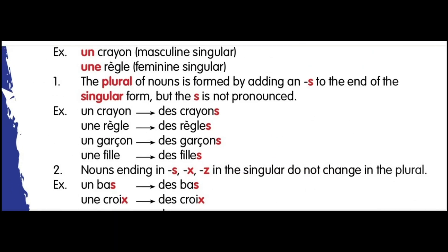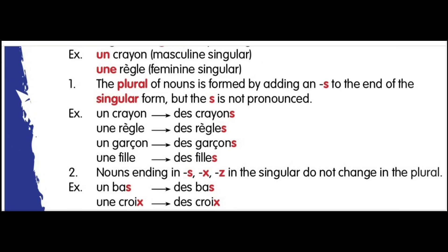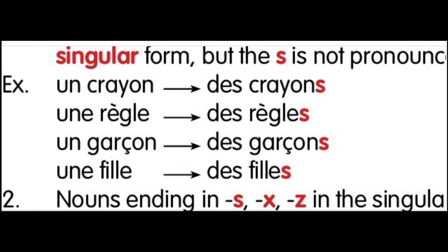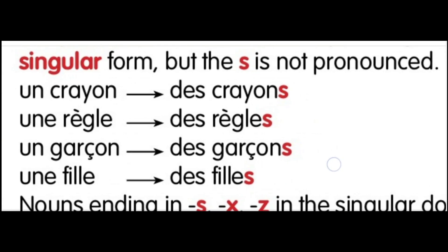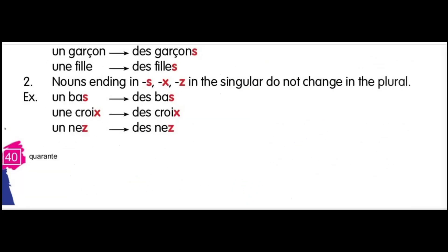Now let us read the rules by which we can convert any word to plural form. The first rule: the plural of nouns is formed by adding an 's' to the end of the singular form, but the 's' is not pronounced. Examples: 'un crayon' becomes 'des crayons', 'une règle' becomes 'des règles', 'un garçon' becomes 'des garçons', 'une fille' becomes 'des filles' — 's' is added to the ending of all of them.